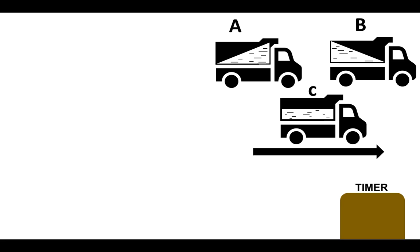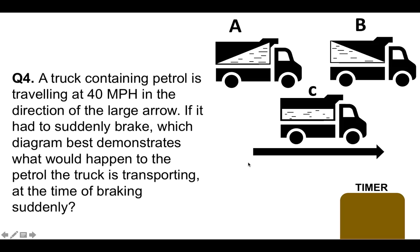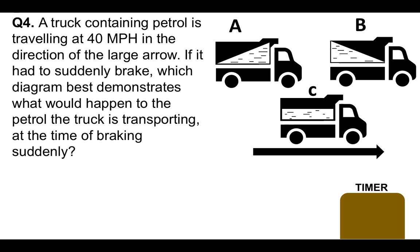Please post your answer in the comments section below for marking. Here we have three trucks, and each truck contains petrol — the petrol is the white shaded part — and this is the direction the truck is moving. Question four: a truck containing petrol is traveling at 40 miles an hour from left to right. If the truck had to suddenly brake, which diagram best demonstrates what would happen to the petrol at the time of sudden braking? Is it truck A, truck B, or truck C? Please put your answer in the comments section below for marking.